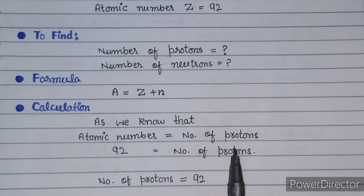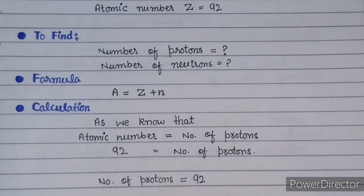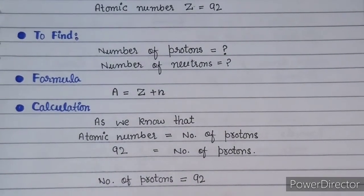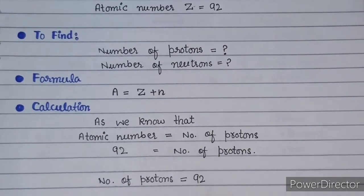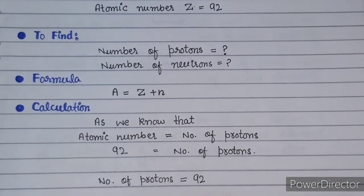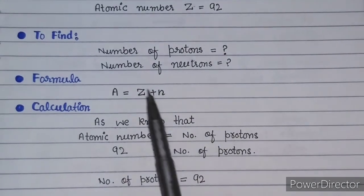And the number of protons will definitely be the same as the atomic number. So we have found the first thing: the number of protons is 92.